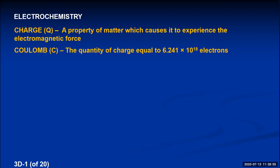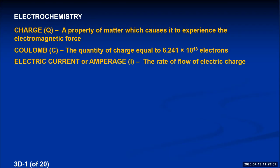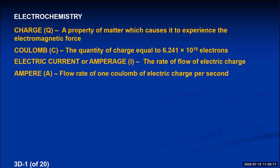Now if electrons are moving in a wire, charge is moving through a wire, and we can measure something called electric current, or sometimes called amperage. This tells how fast the charge is moving through a material — it's the rate of flow of electric charge. The units for electric current are the ampere, abbreviated by capital A, which is the flow rate of one Coulomb of electric charge per second. So if 6.241 × 10¹⁸ electrons are flowing through a wire each second, that would be one ampere of electric current.